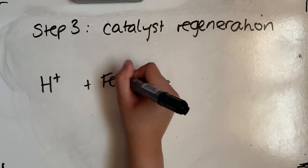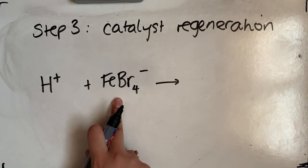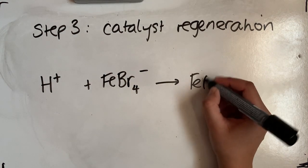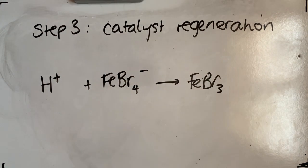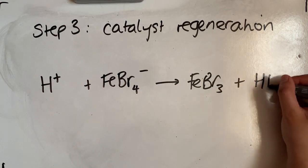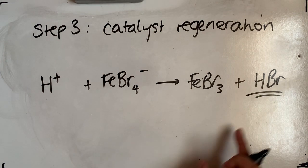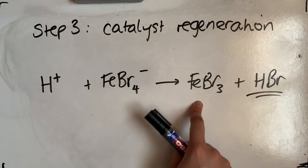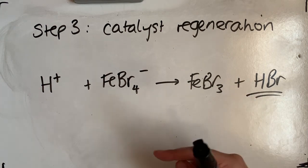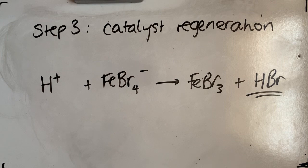In step one, we formed FeBr4 minus, so now we need to regenerate the catalyst, which was FeBr3. And as you can see, the other product has to therefore be HBr, which was that product that we made in our overall reaction. So we've regenerated our catalyst, we formed the other product. Step two, we form bromobenzene, and that is our mechanism for the halogenation of a benzene ring.